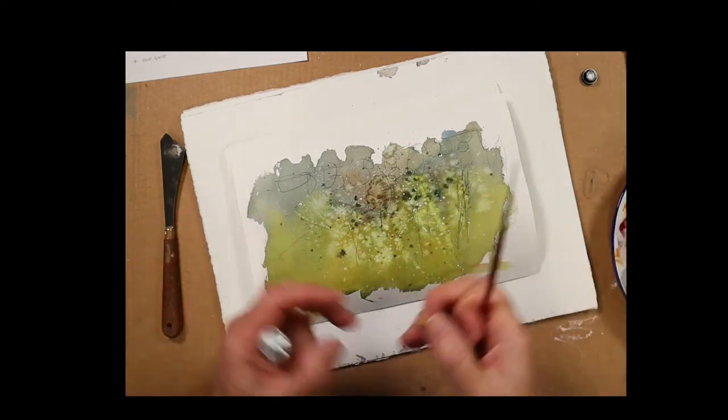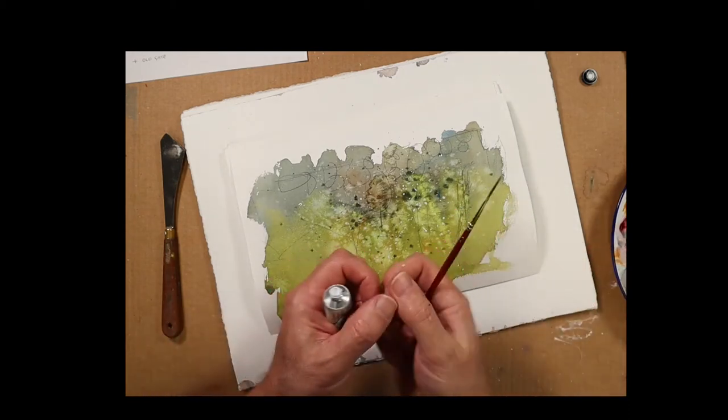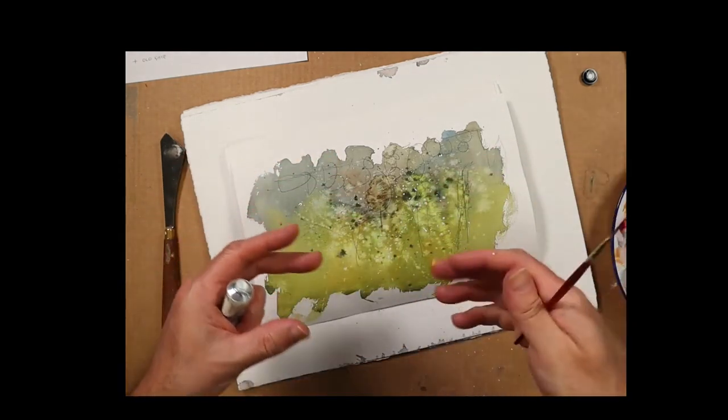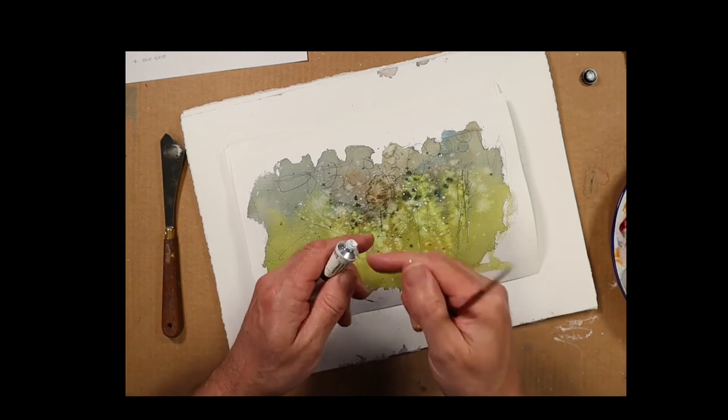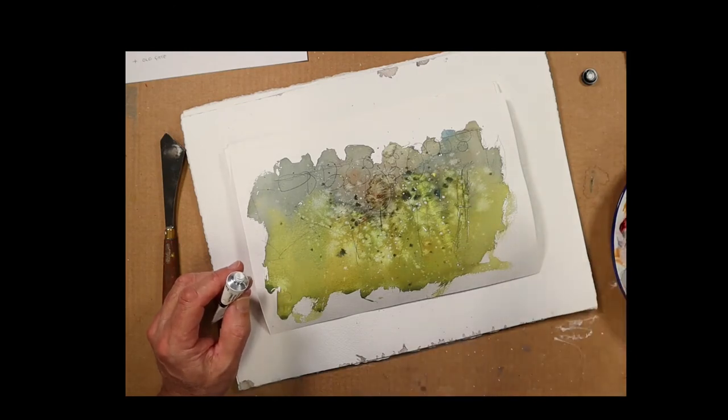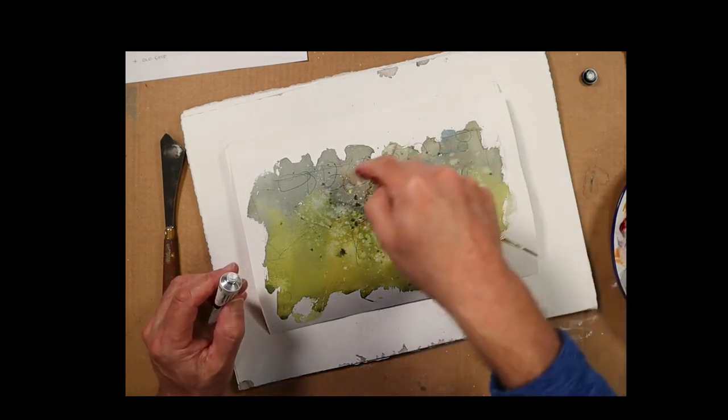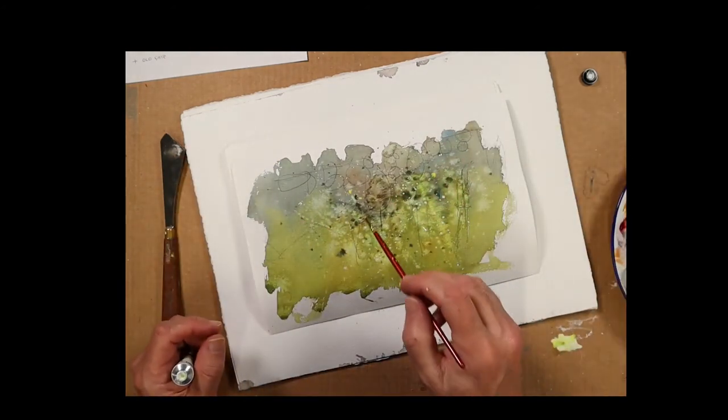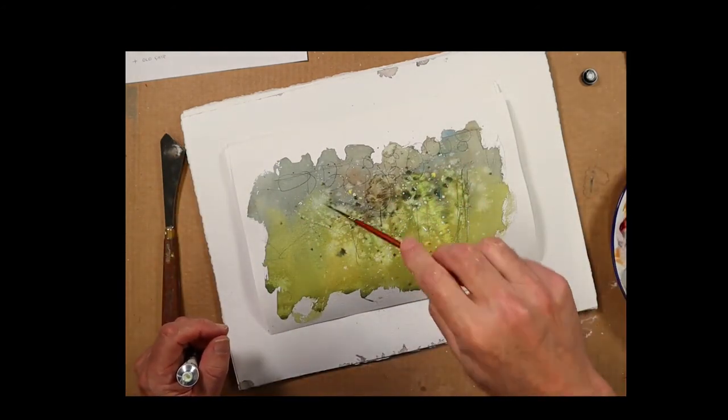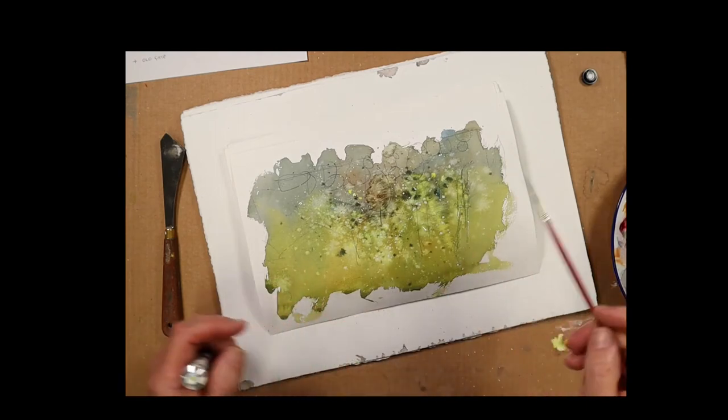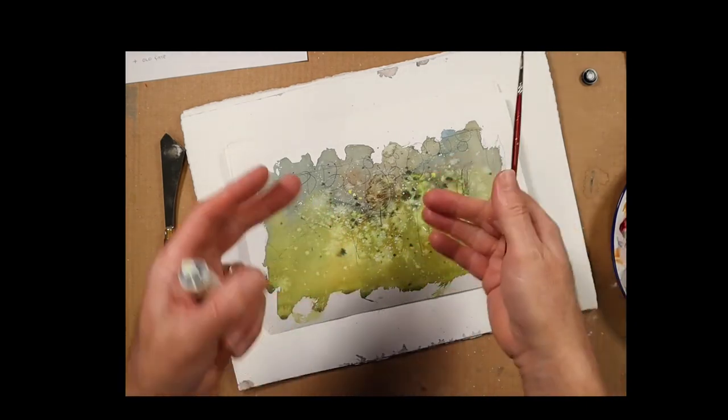The reason why that is different from just tapping water in is because whenever you use an opaque paint—which white is, it's the most opaque of all the watercolor paints—the shape that you tap in retains and doesn't spread so much as water would. The consistency of opaque paint means that if you place a shape with opaque paint, particularly as this is drying off a bit now, that little shape is going to stay there. It's not going to drift or bleed like when just using water.